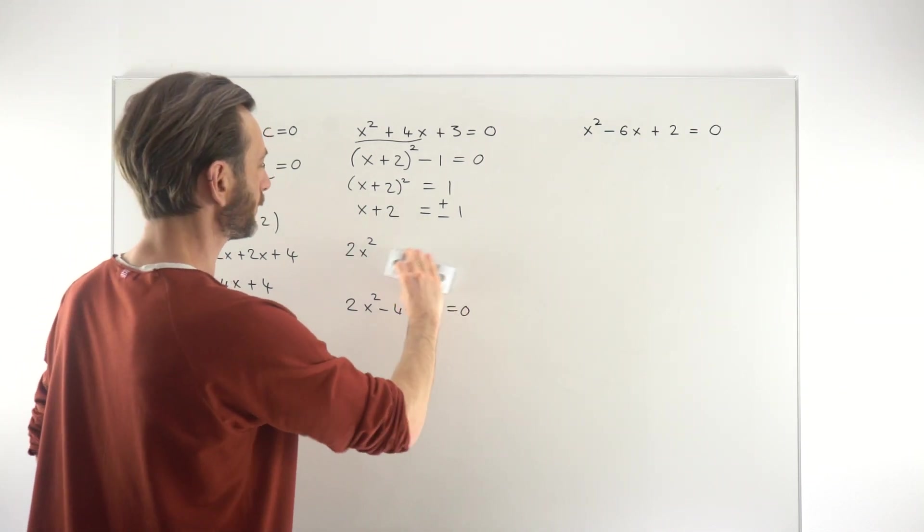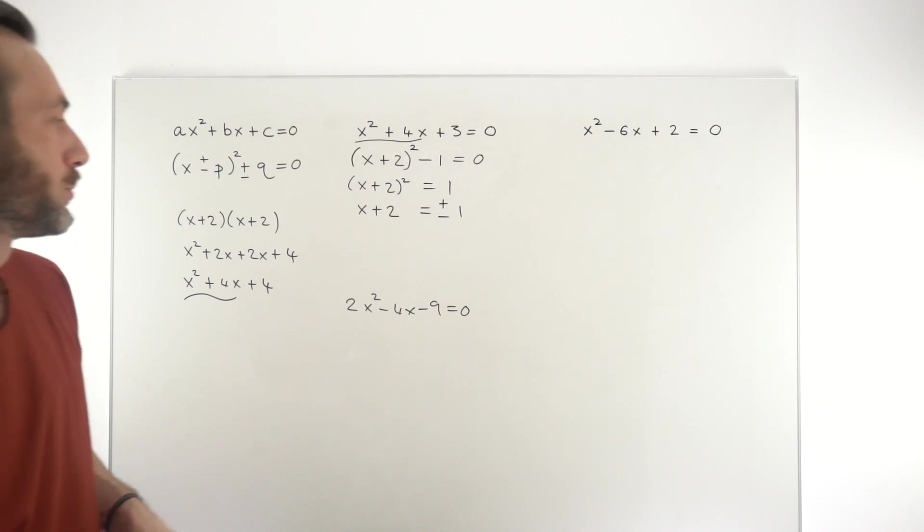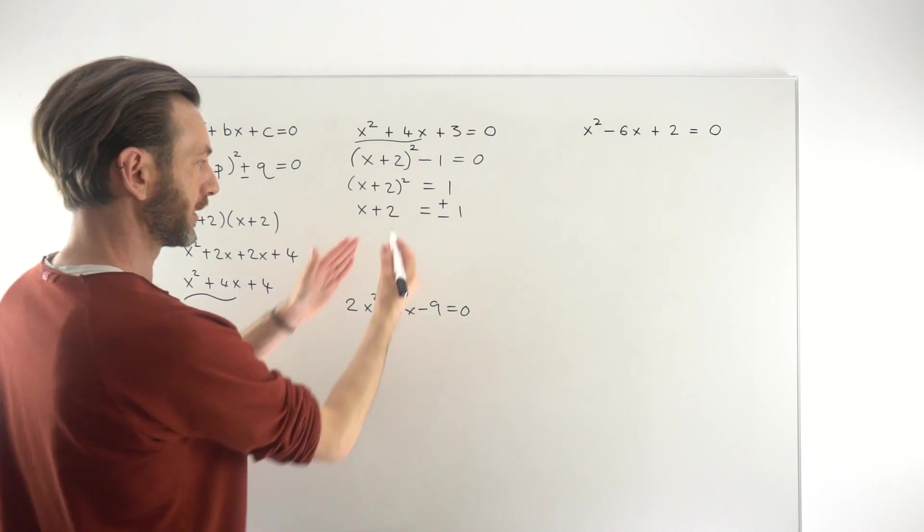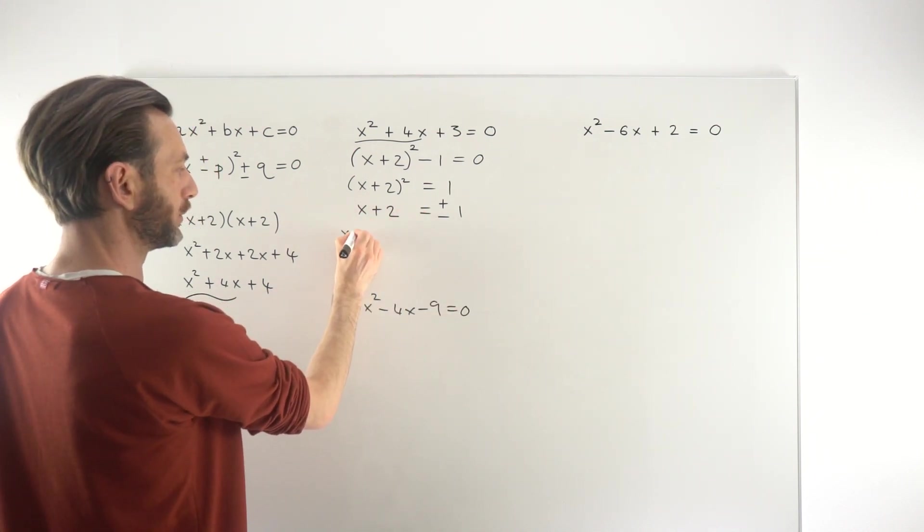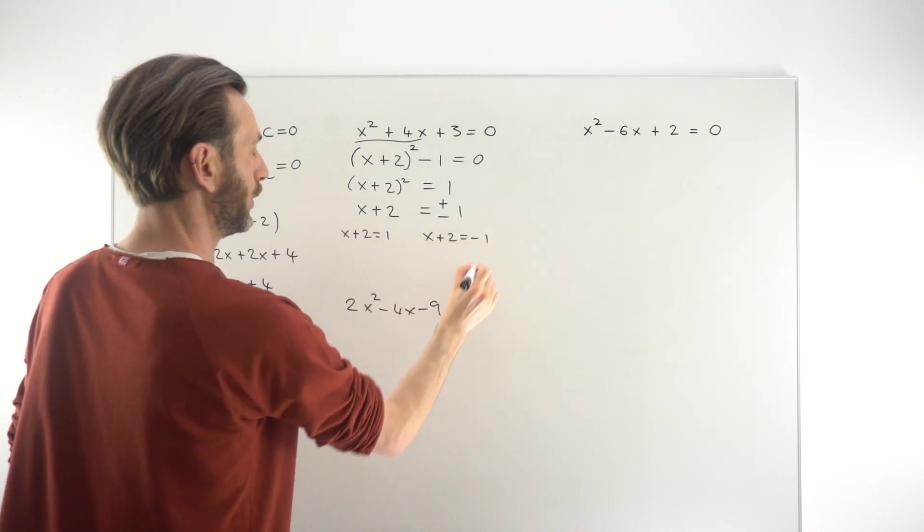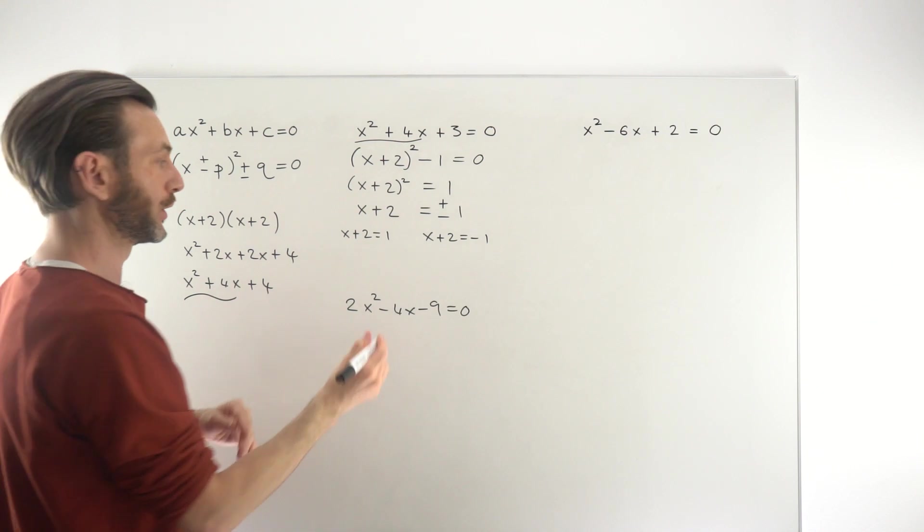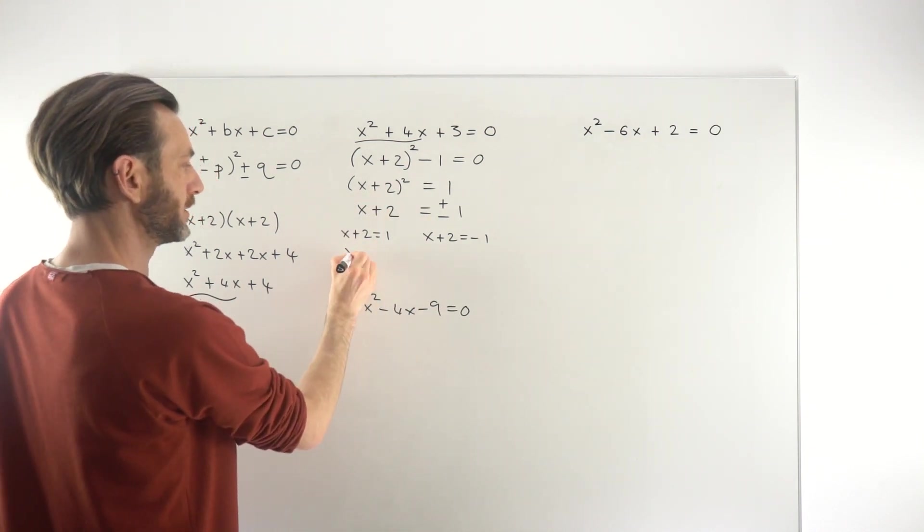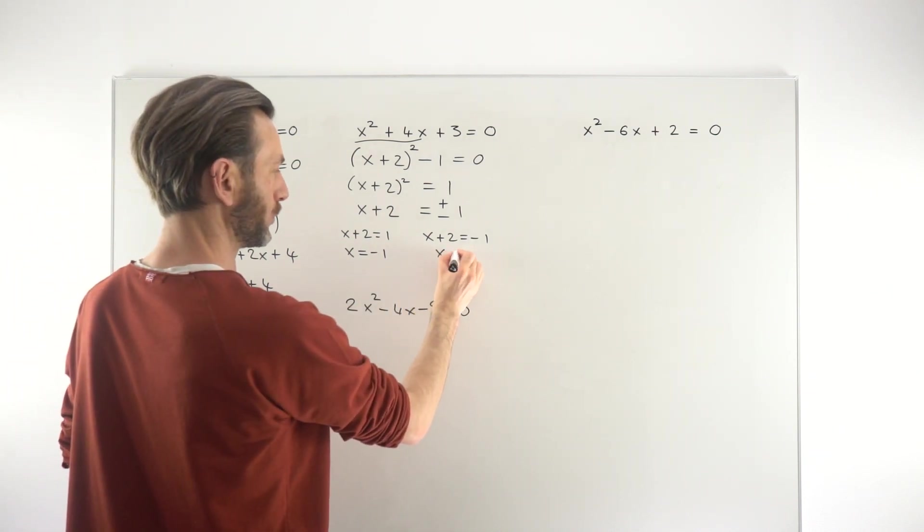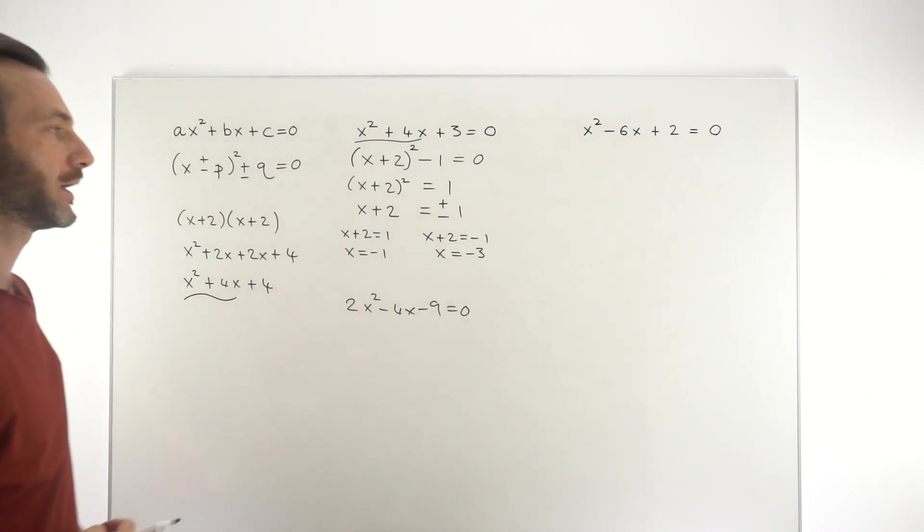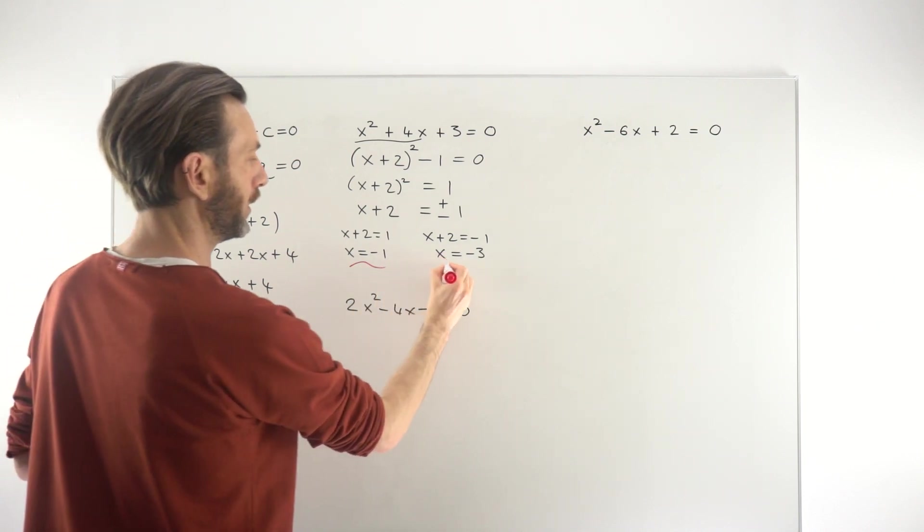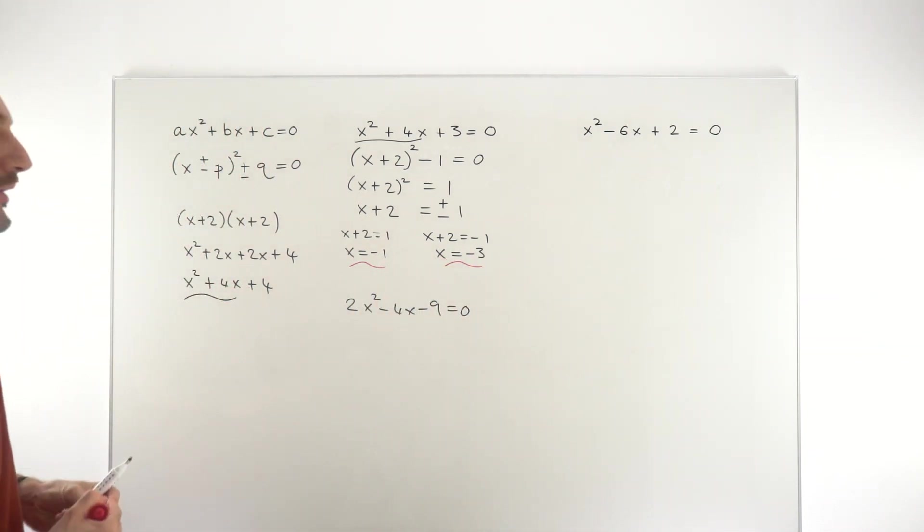We've gotten to this point here, which is now meaning that we need to consider both of those possibilities. So we'll split it off into two. So in one possibility we get x + 2 = 1, and in the other we get x + 2 = -1. Then we've just got two linear equations to solve. So if we move the 2 over to the other side it becomes a -2. So that final solution would be -1 and this final solution would be -3. That's how we solved that one, and we got there by using completing the square.